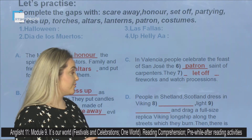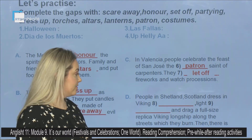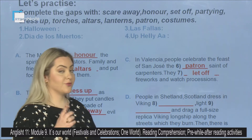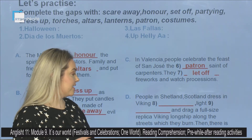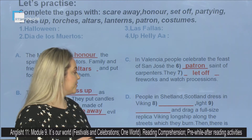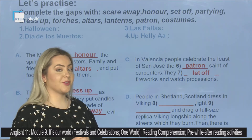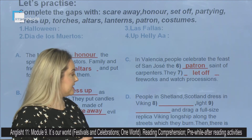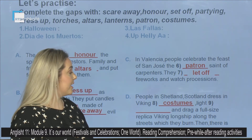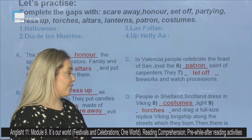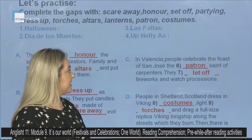People in Shetland, Scotland, dressing in Viking — you should complete number eight — light. Number nine — you should also complete it — and drag a full-size replica Viking longship along the streets which they burn. Then there is number ten — you should complete it — and dancing. The answers are: eight, costumes; nine, torches; and ten, partying.